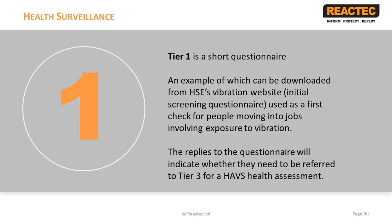New employees, or those changing jobs who will be exposed for the first time, should be given suitable information about the hazards of hand-arm vibration, preferably before they provide information related to their medical records. This will help to alert employees to the potential health consequences of failing to report symptoms of HAVs. Tier 1 also provides an opportunity to educate workers about measures under an employee's control that will help to reduce the risk from vibration transmission.